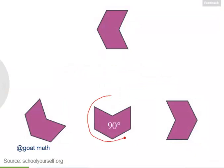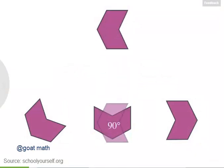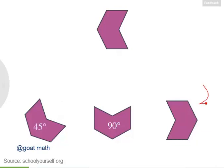Exactly, so this is a 90 degree rotation. If we translate this top shape down here, you can see that a 90 degree rotation will give us this shape. This other shape represents a 45 degree rotation, while another shape is a 180 degree rotation.